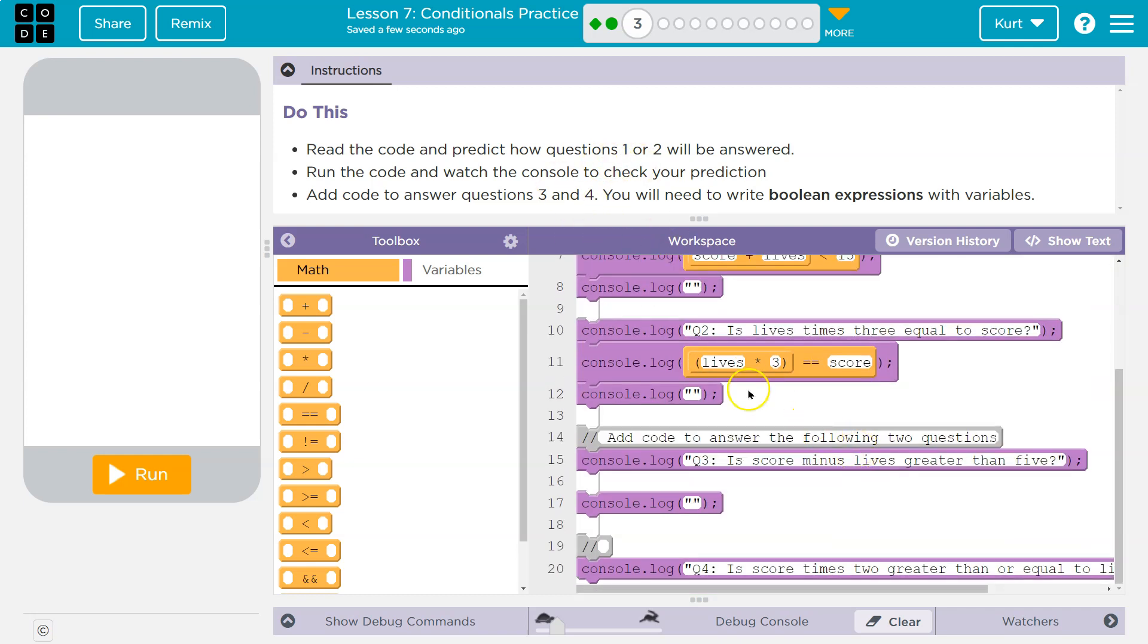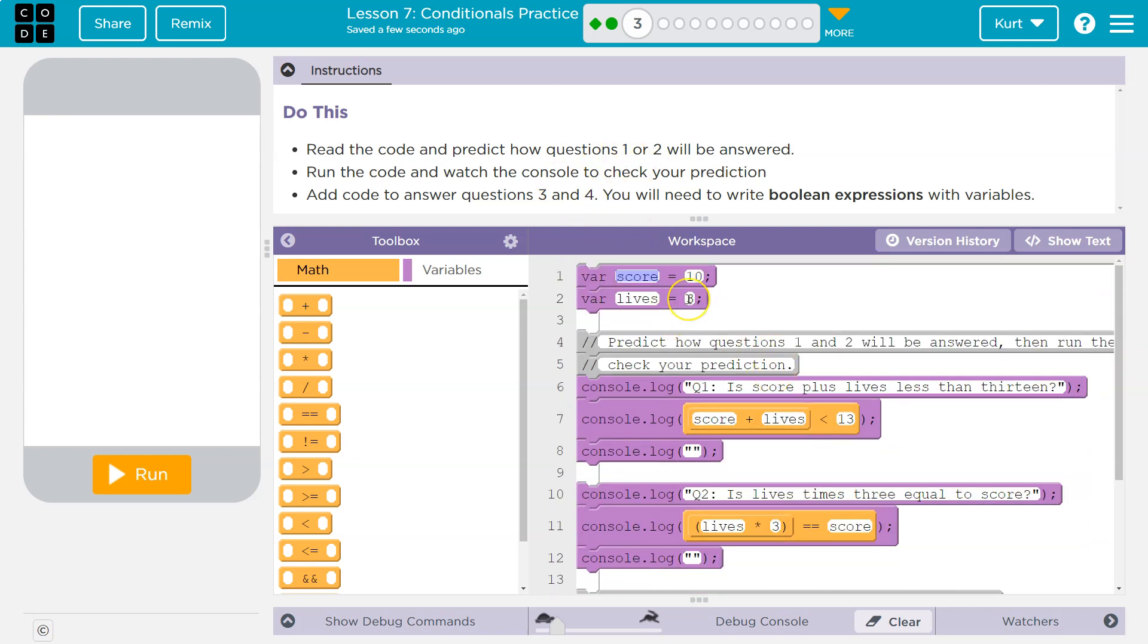What about question 2? Lives times 3. What was lives? 3. So that's 9, right? Lives is 3, so the computer will see lives - boom, 3, grabs 3. 3 times 3 is 9. Is 9 equal to 10? No. So those would both be false.